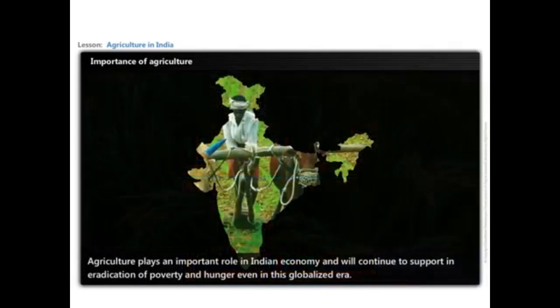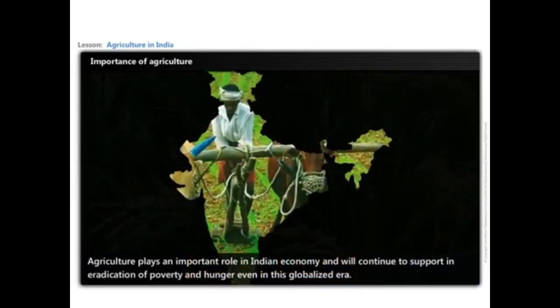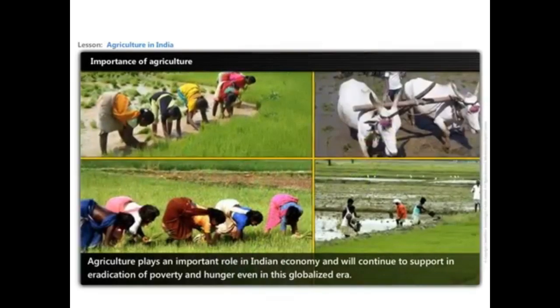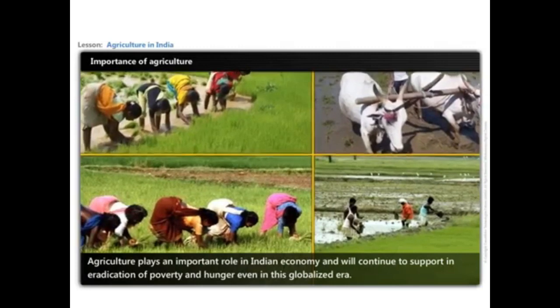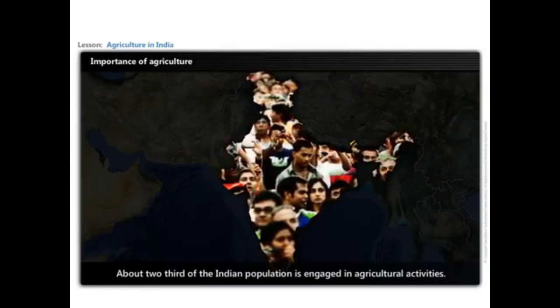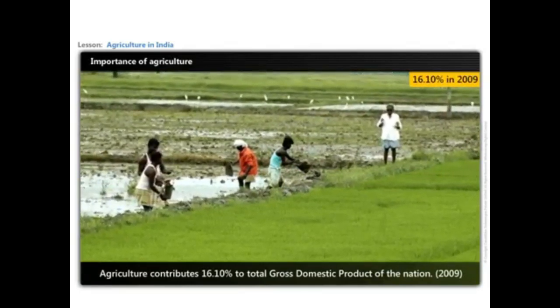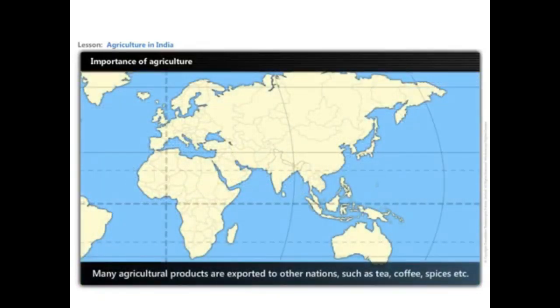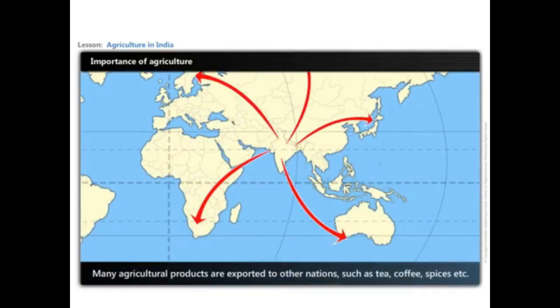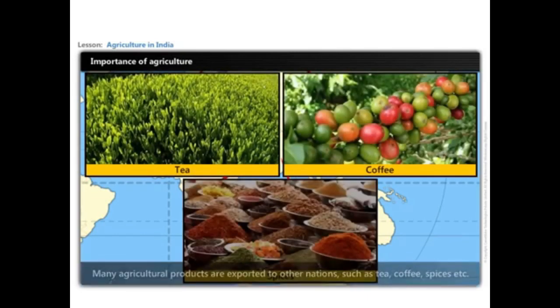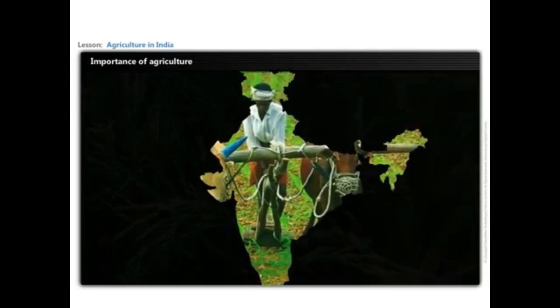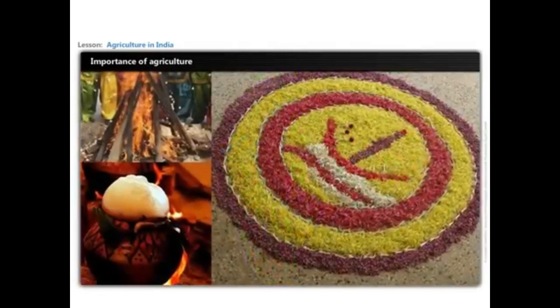Agriculture plays an important role in the Indian economy and will continue to support the eradication of poverty and hunger even in this globalized era. About two-thirds of the Indian population is engaged in agricultural activities. Agriculture contributes 16.10 percent to the total gross domestic product of the nation. Many agricultural products are exported to other nations, such as tea, coffee, and spices.